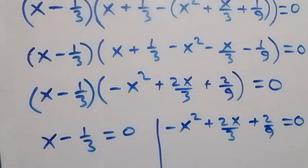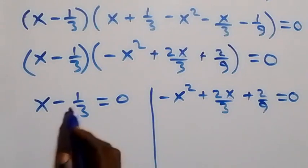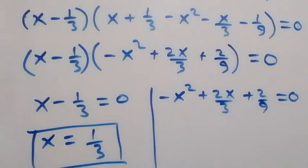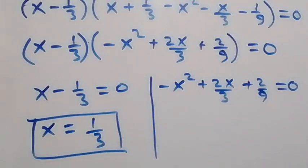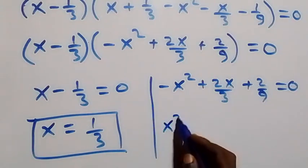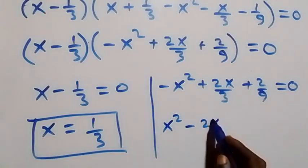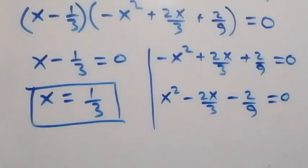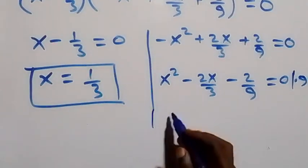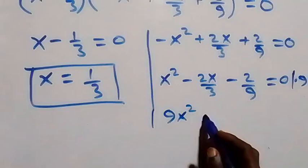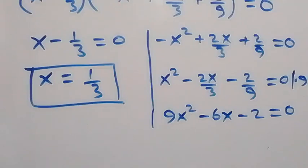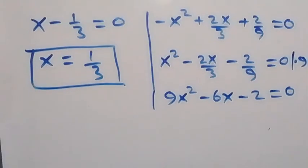From the first case, x equals 1 over 3. For the second case, we solve the quadratic. Multiplying by minus 1: x squared minus 2x over 3 minus 2 over 9 equals zero. Then multiplying through by 9 to clear fractions: 9x squared minus 6x minus 2 equals zero.